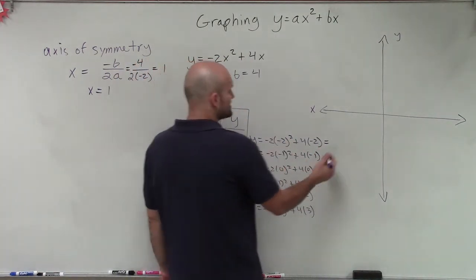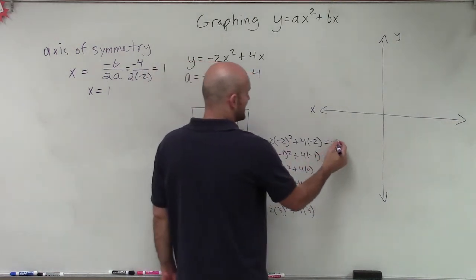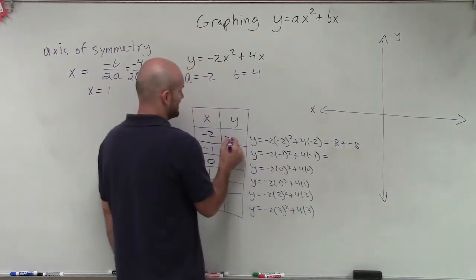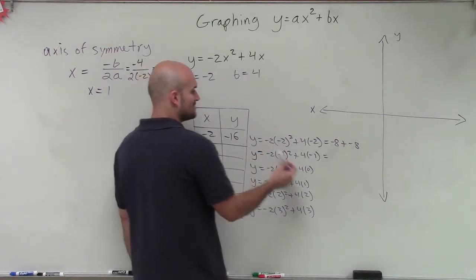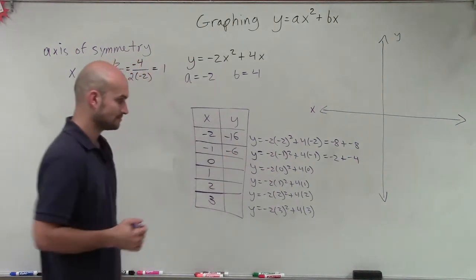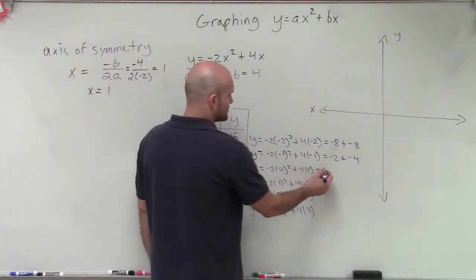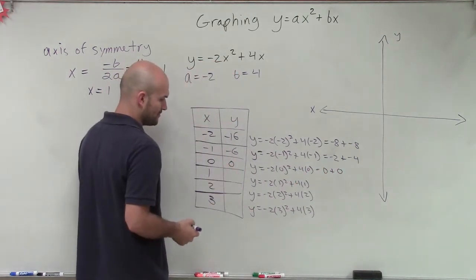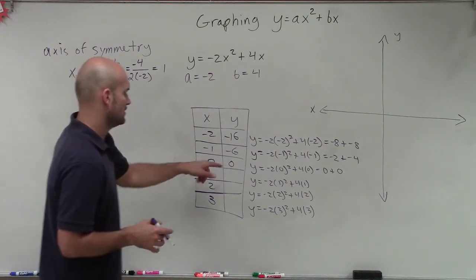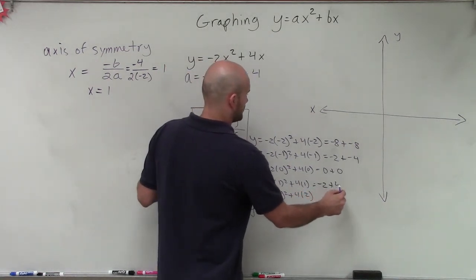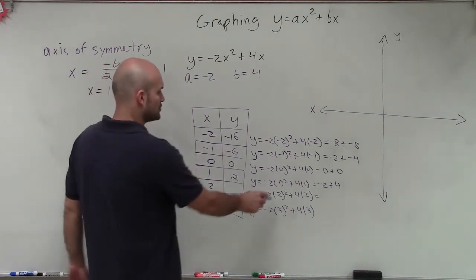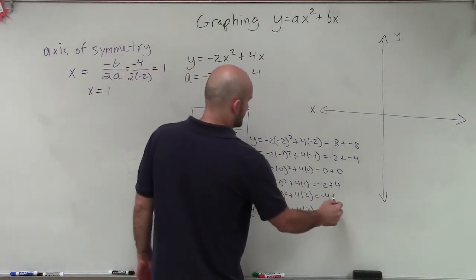Negative 2 squared is positive 4, times negative 2 is negative 8, plus negative 8 gives negative 16. Negative 1 squared is 1, times negative 2 is negative 2, plus 4 times negative 1 which is minus 4, giving negative 6. Zero squared times negative 2 is 0 plus 0, giving 0. One squared times negative 2 is negative 2, plus 4 gives positive 2. Two squared is 4 times negative 2 is negative 8, plus 8 gives 0.